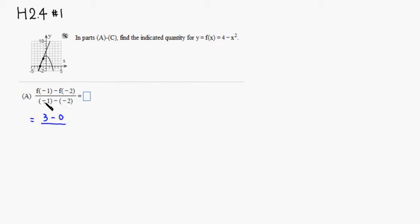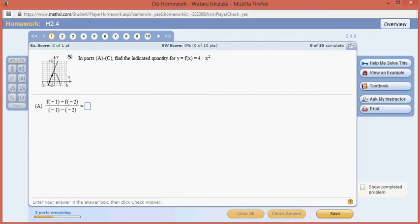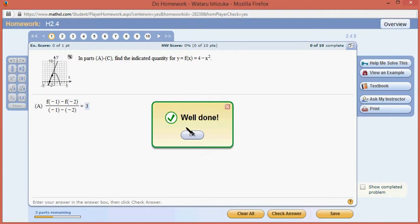Then you have negative 1 minus negative 2, so you're adding 2, so that's going to be 1. So this is going to be 3 over 1 is 3. Let's type it in. So that should be 3. Let's check. All right, so we got that.